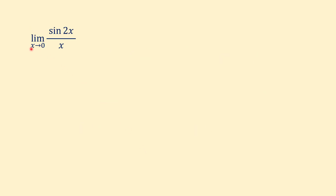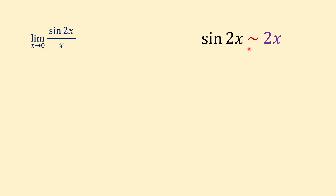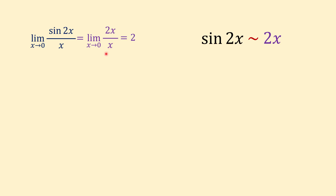Let's try some examples. We are asked to find the limit of sine of 2x over x when x approaches 0. When x approaches 0, sine of 2x can be replaced with 2x. So the limit equals limit of 2x over x when x approaches 0. If we cancel x from numerator and denominator, the value of the limit is 2.